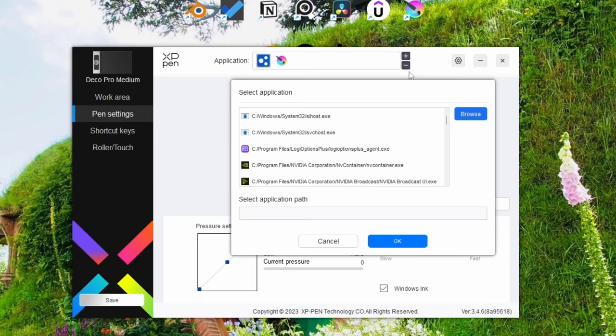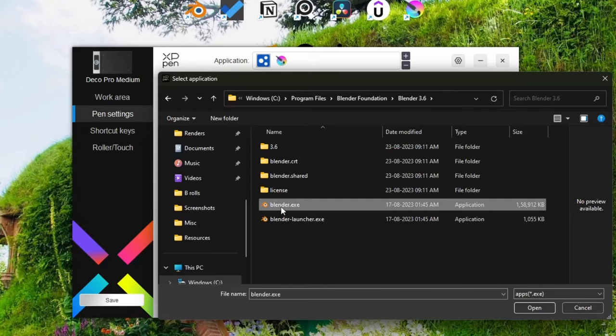If you want to set different commands for each software, you can click on this plus icon then navigate to the directory of the software. In my case I'm adding Blender. Then I've set this button on the pen to middle click.